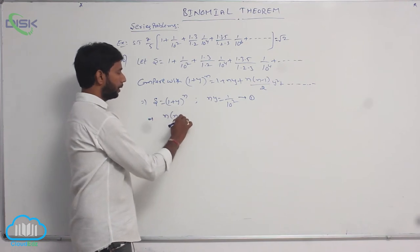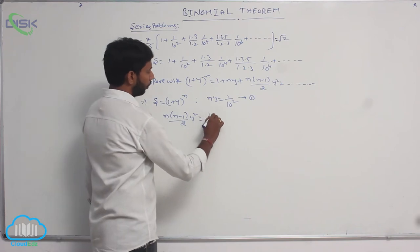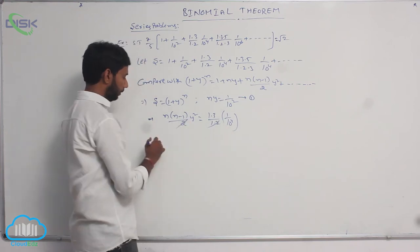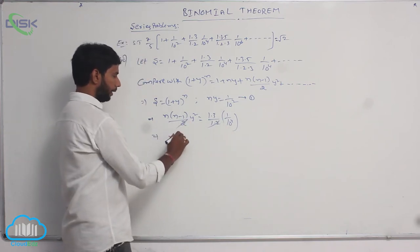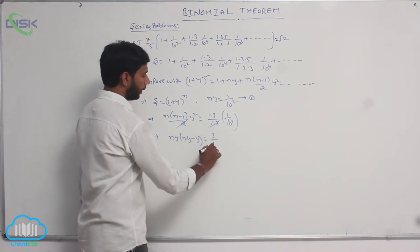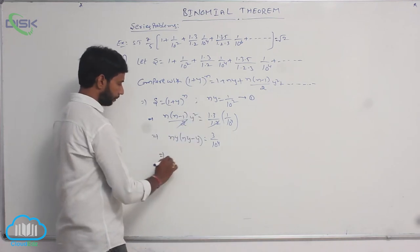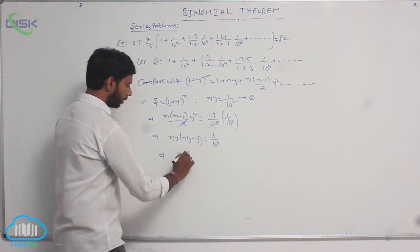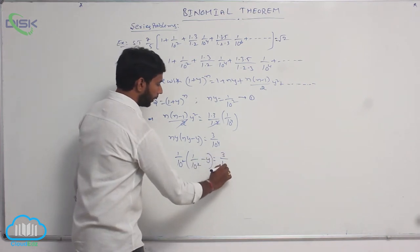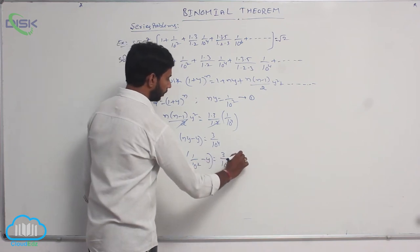Now, n(n-1)/2 · y² = (1·3)/(1·2) · 1/10⁴. The 2 cancels, and this can be written as ny·(ny - y) = 3/10⁴. Since ny = 1/10², the 10² cancels, giving 1/10² - y = 3/10⁴. Further simplification gives 1/10² - y = 3/100.